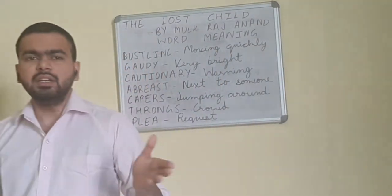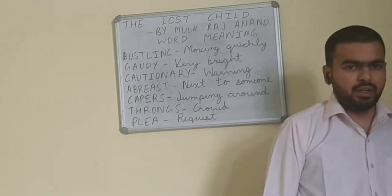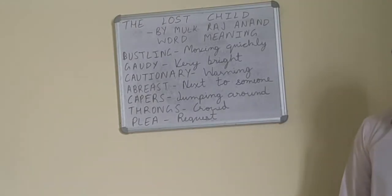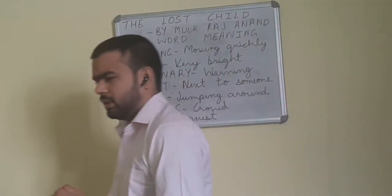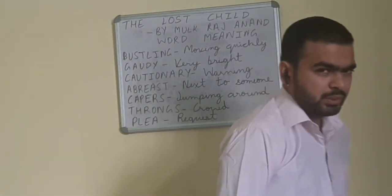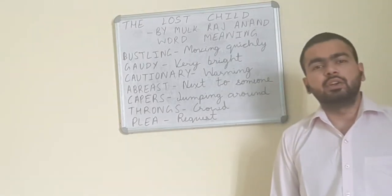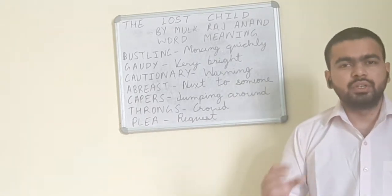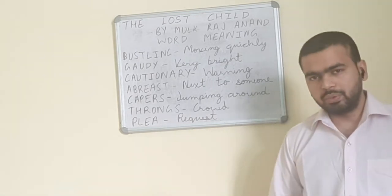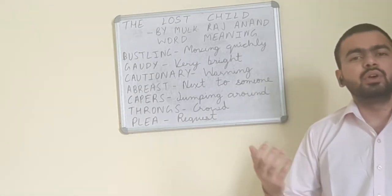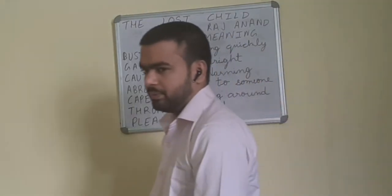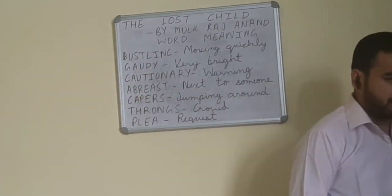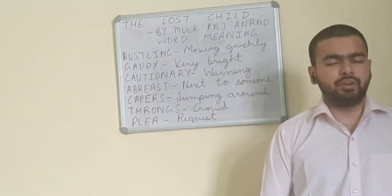In today's class, we will be continuing 'The Lost Child' by Mulkraj Anand. We have read some part of it and done a few paragraphs. What we have read so far: there is a child going to the spring fair with his parents. We also know something about the character of the father — he is authoritarian, a dictator type. The child knows that his father would refuse whatever he asks.